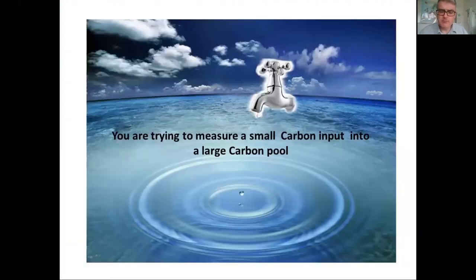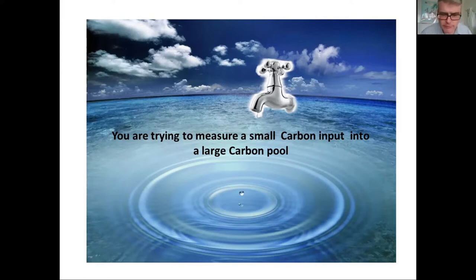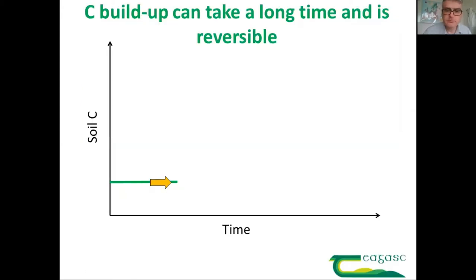Why is measuring soil carbon difficult? You're trying to measure a very small input — maybe a quarter of a tonne or half a tonne per year — into a very large pool. The carbon in the soil might be two, three, or a thousand tonnes of carbon per hectare, and you're trying to measure a quarter or half a tonne of carbon input per year. It also takes a long time because it's only a very small buildup.